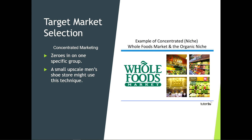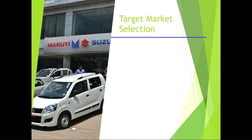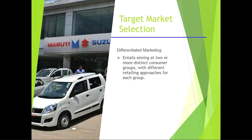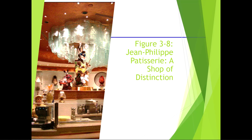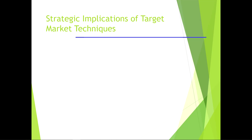Differentiated marketing entails aiming at two or more distinct consumer groups with different retailing approaches for each group; department stores are a key example. An example shown is Jean-Philippe Patisserie, a shop of distinction where the selection of a target market and its satisfaction through a unique retail offering is essential. Retailers are better able to satisfy customer needs when they have a good understanding of consumer behavior.